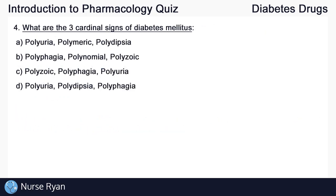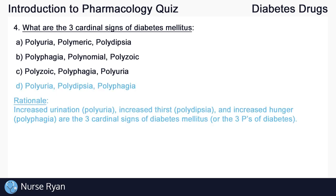Question number four: what are the three cardinal signs of diabetes mellitus? The answer here is D — polyuria, polydipsia, and polyphagia. Increased urination, or polyuria; increased thirst, which is polydipsia; and increased hunger, which is polyphagia, are the three cardinal signs of diabetes mellitus, also known as the three Ps of diabetes.